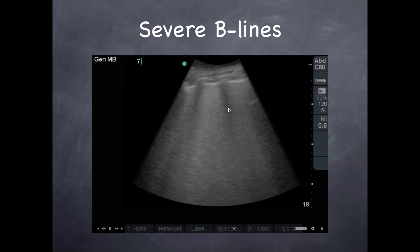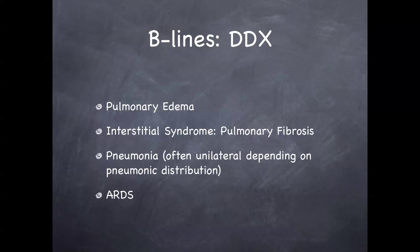This is a severely positive exam. Your differential: diffuse florid pulmonary edema — every zone you put your probe in, you'll see that pattern. You can also see it in pulmonary fibrosis, with pneumonia especially unilaterally, and ARDS will give you this B-line pattern as well.